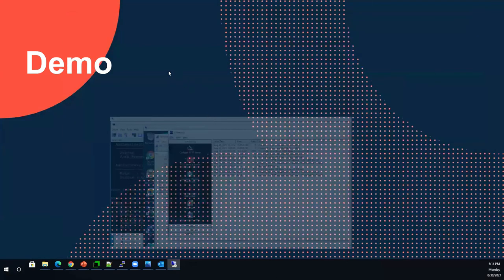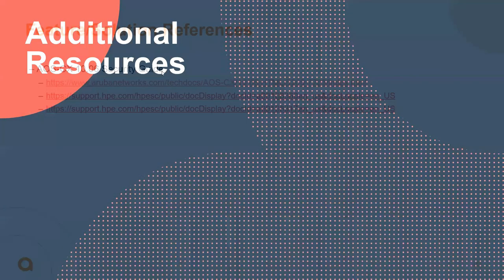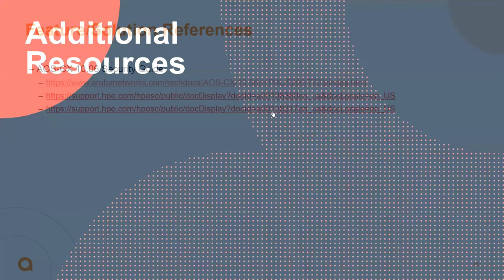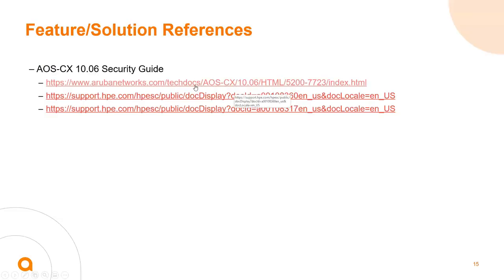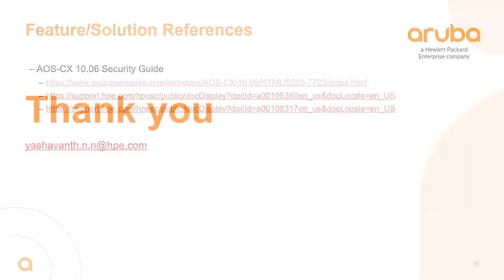The additional resources for these two features are in the AOSCX Security Guide — both an HTML link and a PDF link are provided. These two links will help you explore the auth priority and cache re-auth security enhancement features that are part of AOSCX 10.6. Thank you for listening. Have a wonderful day.